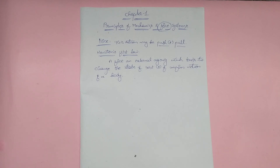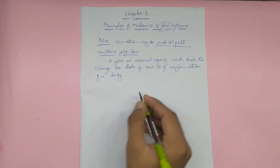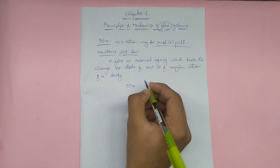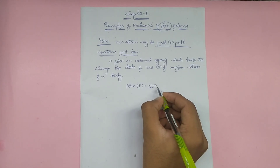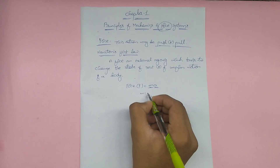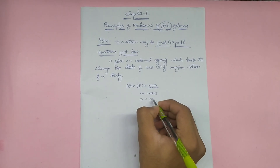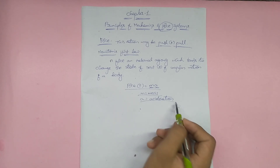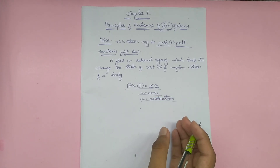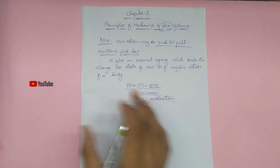Simply, force is a push or pull — if you push or pull, physical changes happen, direction changes, and movement happens. The formula for force: F is equal to m times a, where m is mass and a is acceleration.